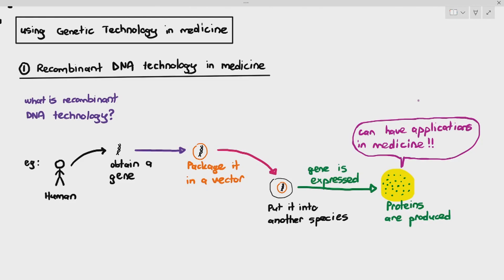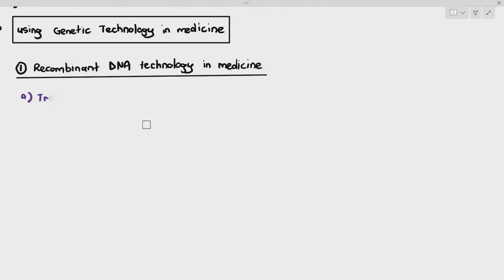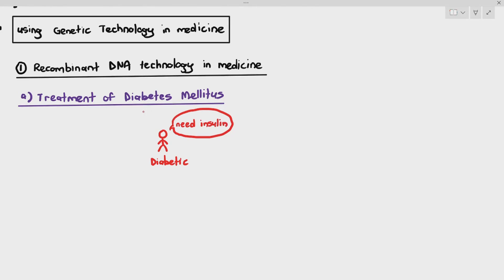One example of using recombinant DNA technology in medicine is in the treatment of diabetes mellitus. Now if you don't remember what diabetes mellitus is all about, it is just mainly there are two types of diabetes mellitus. There's type 1 and type 2. But without going into the detail of it, a person who is diabetic is someone who might require insulin because perhaps their body is unable to produce insulin or they are not able to produce an adequate amount of that insulin hormone in their body. So to treat a person with diabetes, they require insulin.